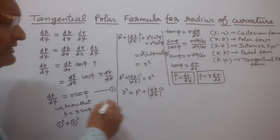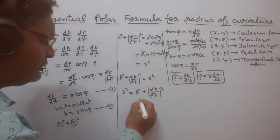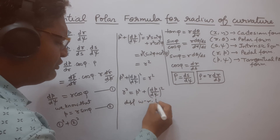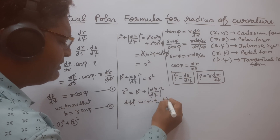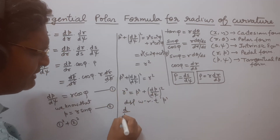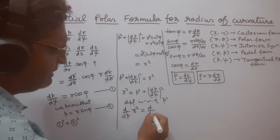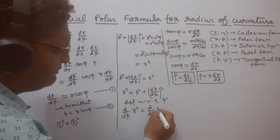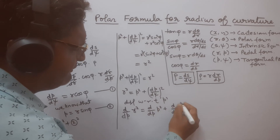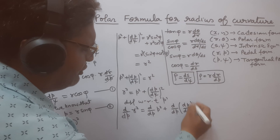Now we differentiate r² = p² + (dp/dψ)² with respect to p. So we get d/dp of r² = d/dp of p² + d/dp of (dp/dψ) whole square.